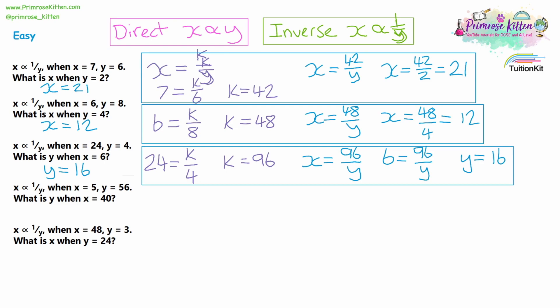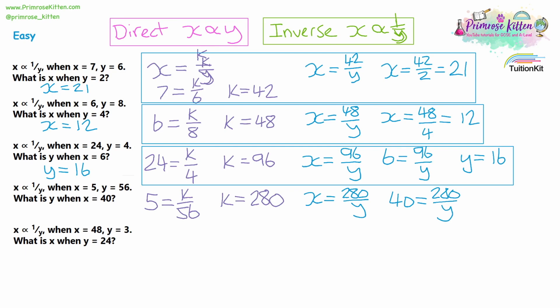Question 4: we write x equals k over y, substituting x equals 5 and y equals 56. To find k, we multiply both sides by 56, and 56 times 5 gives k equals 280. So our formula is x equals 280 over y. For the follow-up, x is 40, so 40 equals 280 divided by y. Doing 280 divided by 40 gives y equals 7. Check: 280 divided by 7 does give 40. So y equals 7.